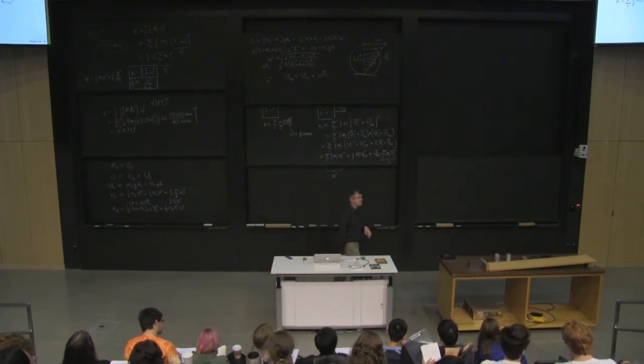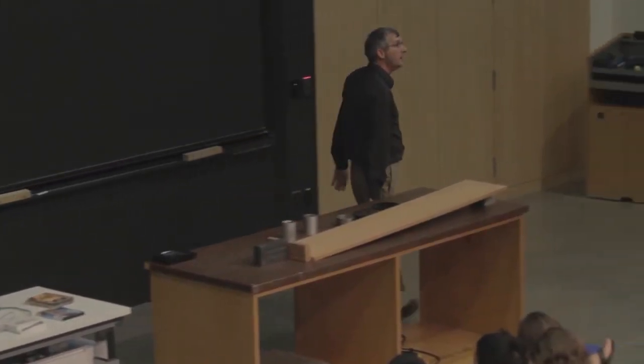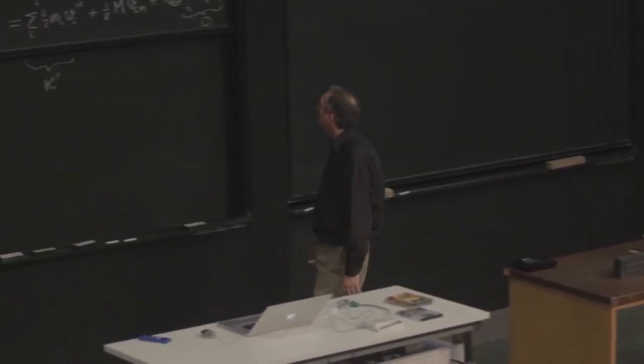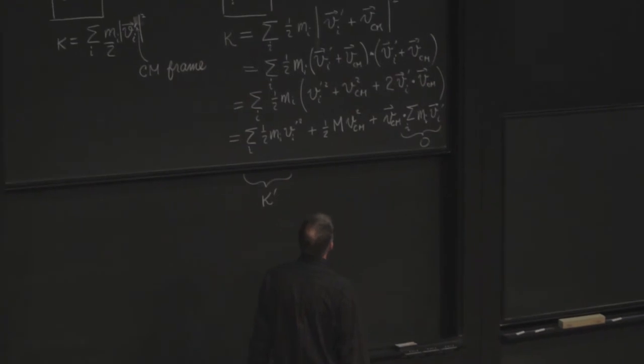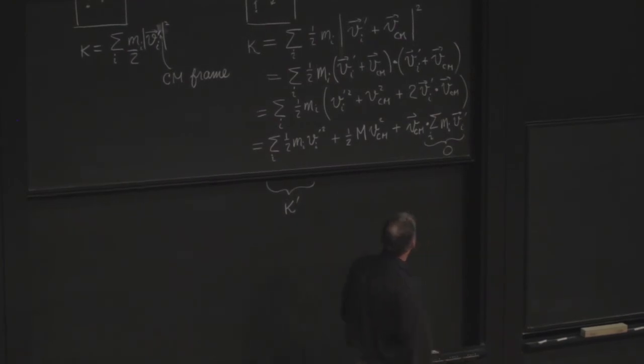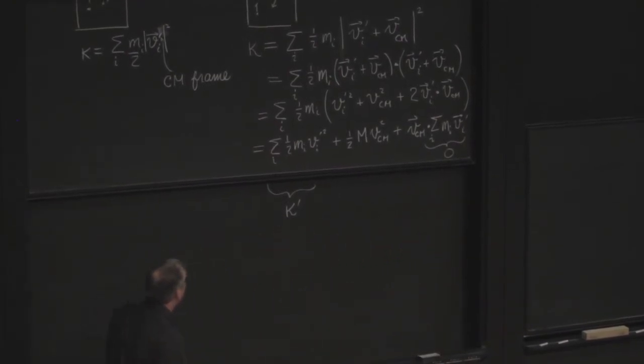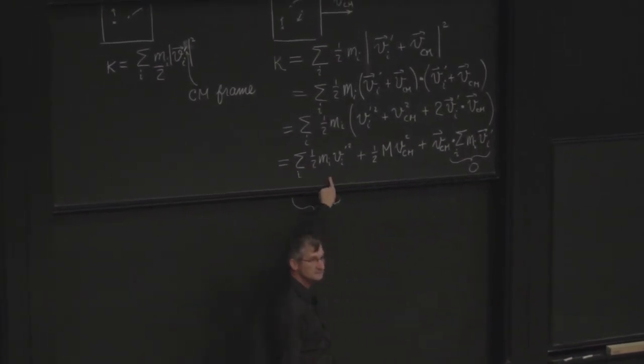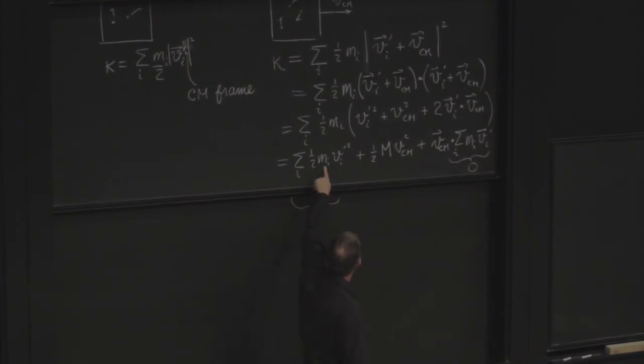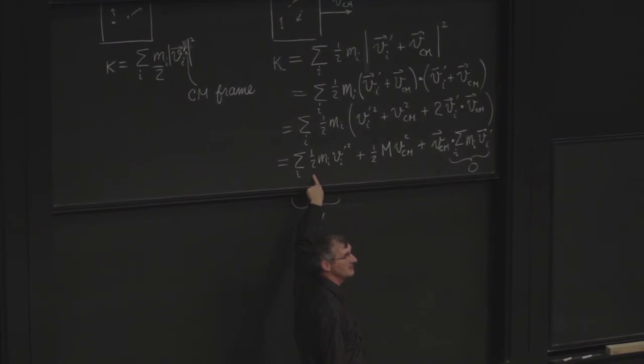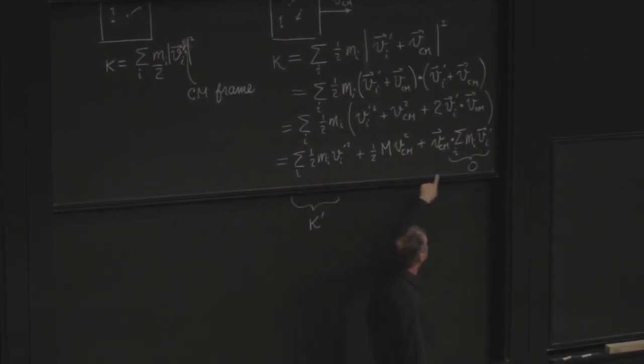Question: Why is that sum of m i v prime i is 0 on the right of the space? Excellent. He says, why does this one go away, whereas this one doesn't? So in this one, I'm adding up v sub i prime squared multiplied by m sub i. So these are all positive definite. There's no way that can sum to 0 unless they're all 0. But over here, it's the vector to the first power.